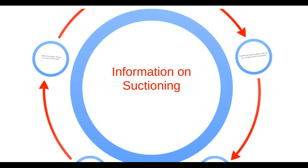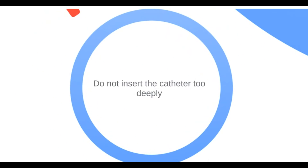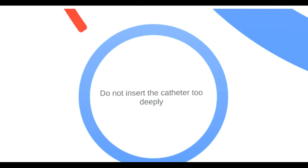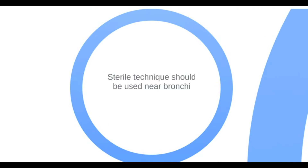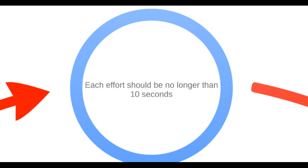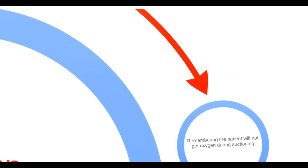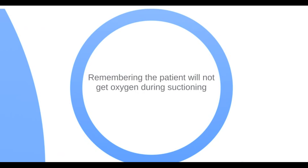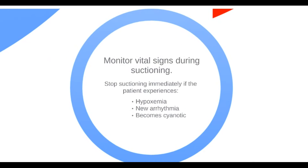Here are some tips on suctioning: do not insert the catheter too deeply; sterile technique should be used near bronchi; each effort should be no longer than 10 seconds. Keep in mind that the patient will not get oxygen during suctioning. Monitor vital signs and stop if the patient experiences hypoxemia, new arrhythmia, or becomes cyanotic.